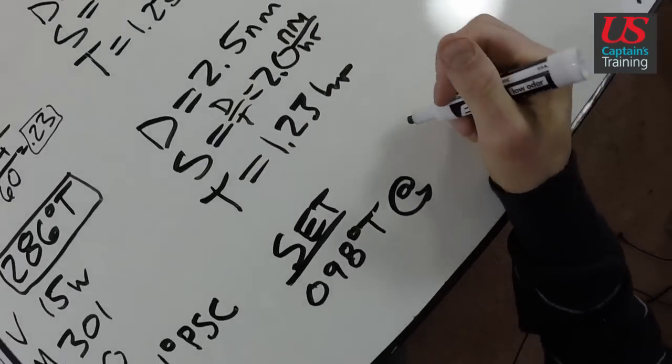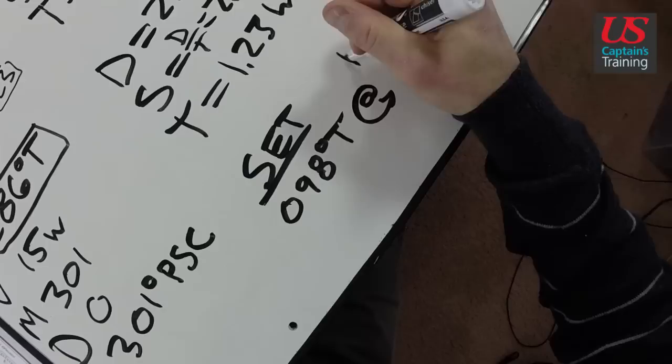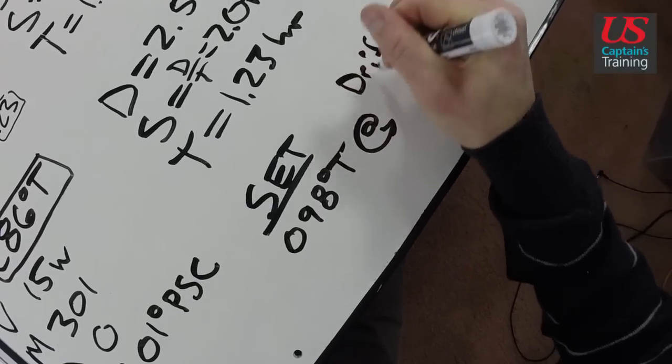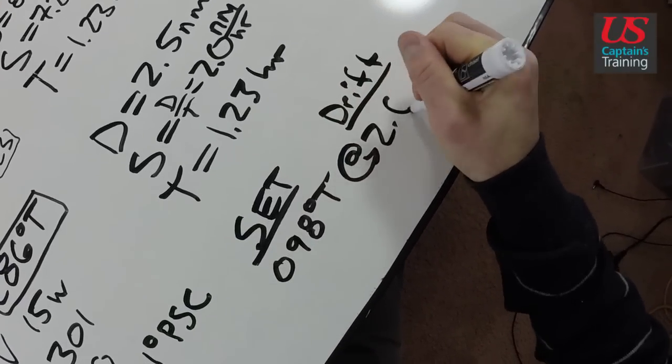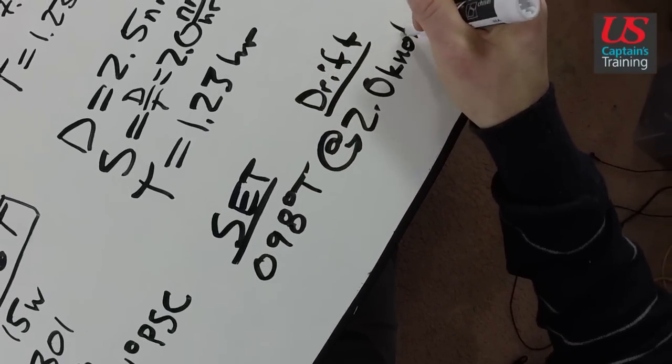So our set was 098, and our drift is 2.0 knots.